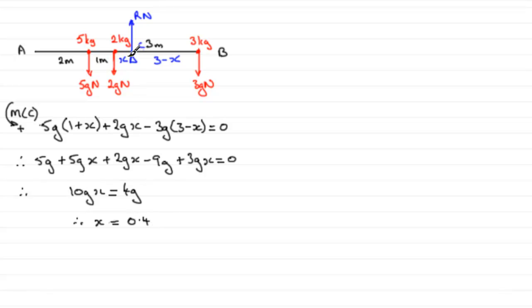So, you can see that the centre of mass C then is a distance of 0.4 metres away from the 2kg particle. If we wanted the distance of the centre of mass away from, say, A, well that would be easy. The distance from A would simply be 2 metres plus 1 metre plus X, a total of 3.4 metres.